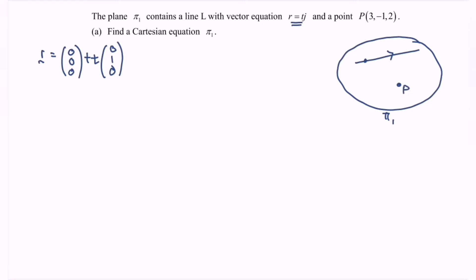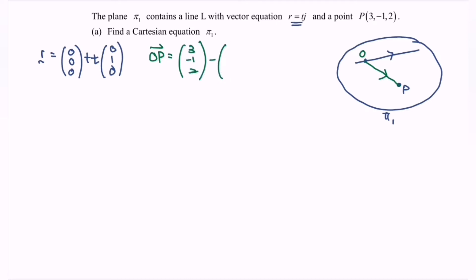In order to find the plane, we must have the normal. Before we find the normal, determine the vector OP. So OP equals P minus A, which is (3, -1, 2) minus (0, 0, 0). Therefore the vector OP equals (3, -1, 2), and that is the direction for OP.